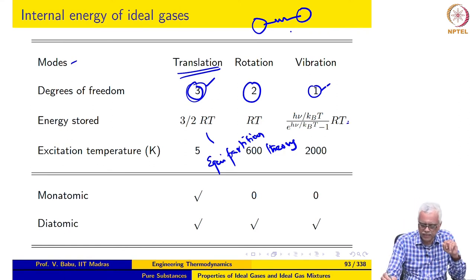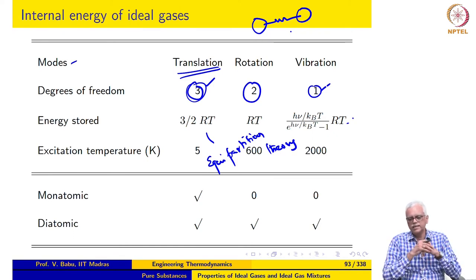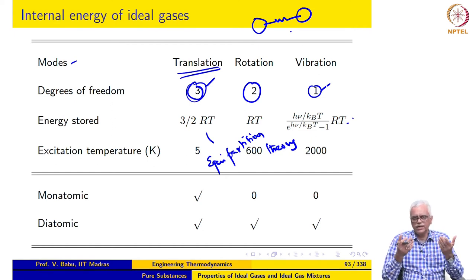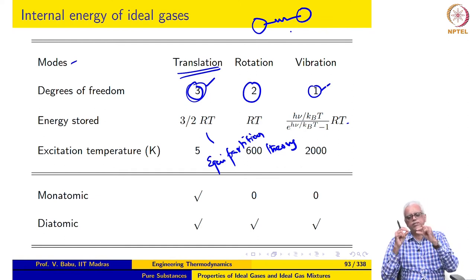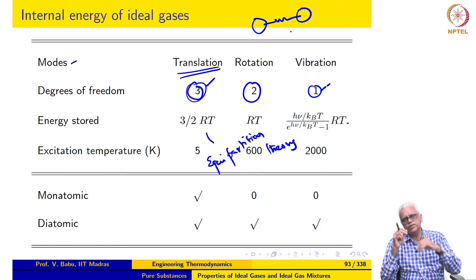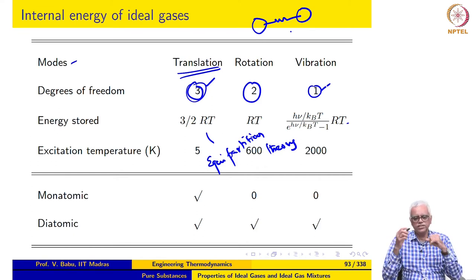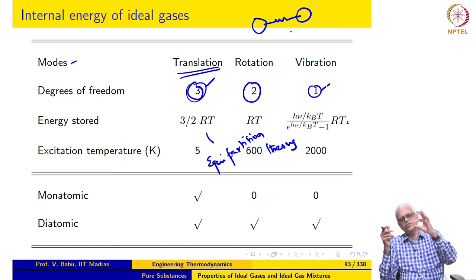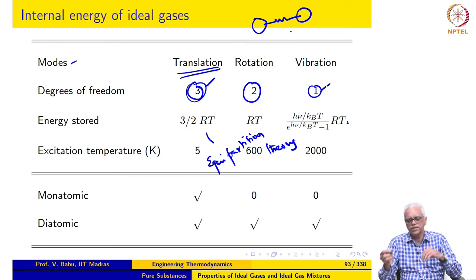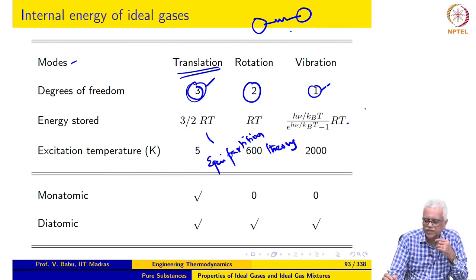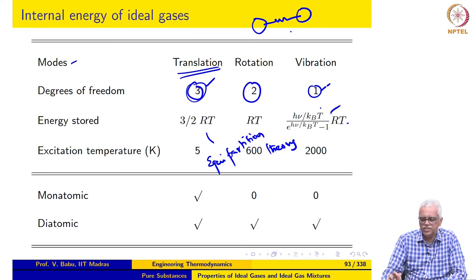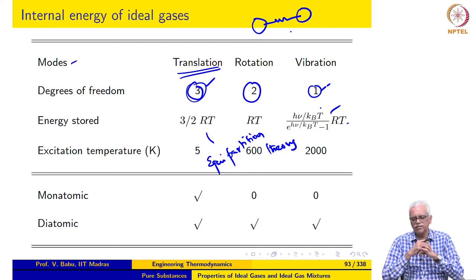Strictly speaking, translation and rotation are also quantized, but the spacing between the levels is so small that classical theory gives very good expressions for the energy stored. However, for vibration the levels are not so closely spaced, so we need quantum theory to calculate the energy that can be stored. That gives an expression for the amount of energy stored in the vibrational mode.